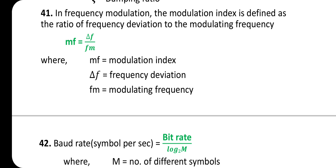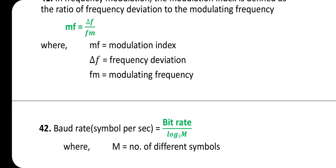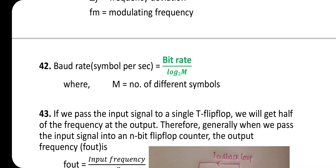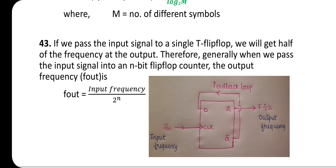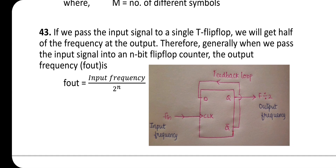Baud rate (symbols per second) = bit rate / log₂(M), where M is the number of different symbols.